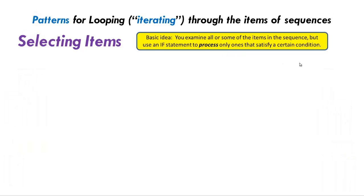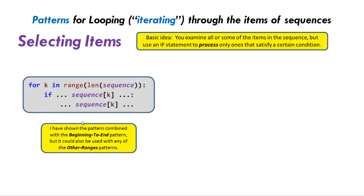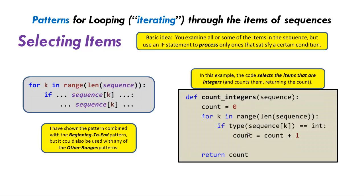Our next pattern for iterating through a sequence is almost the same as the first two. This is one where we go through some or all of the sequence, but we use an if statement to process only ones that satisfy a condition. Here's the general pattern: k goes in range of length of sequence, and we have an if statement — if sequence k meets some condition, then we do something with sequence k. Here's a concrete example: we loop through the sequence and if the type of sequence k is an integer, we count it and return how many there are. It's commonplace to process only some of the items that you actually examine.